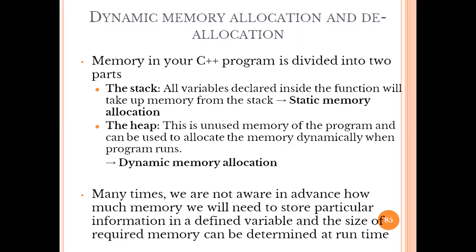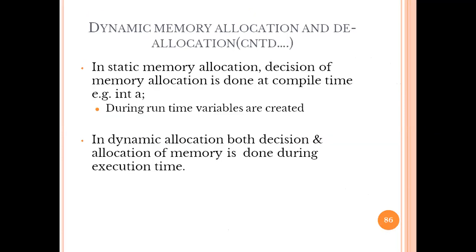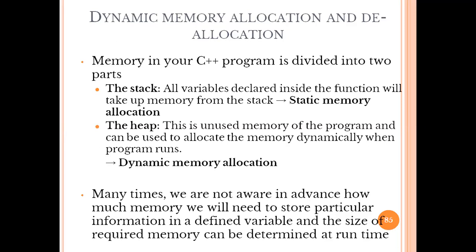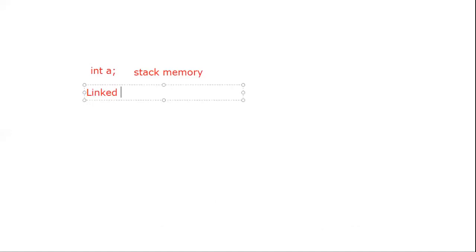Can anyone tell me which data structures or programming structures we use to create dynamic memory allocation? For dynamic memory allocation, we use linked lists. This is one kind of case in which we are using dynamic memory allocation. Can anyone tell me what is the difference between an array and a linked list?